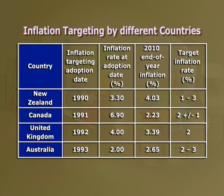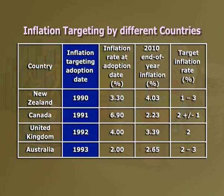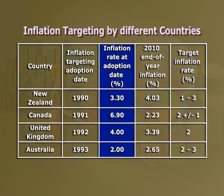There are 28 countries that have adopted inflation targeting, fixing the consumer price index as their monetary policy goal. Looking at a table, on the left side we have countries like New Zealand, Canada, United Kingdom, and Australia. The first column depicts inflation targeting adoption dates: 1990, 1991, 1992, and 1993 respectively. The second column shows inflation rate at adoption date: New Zealand in 1990 at 3.30%, Canada in 1991 at 6.90%, United Kingdom in 1992 at 4.00%.